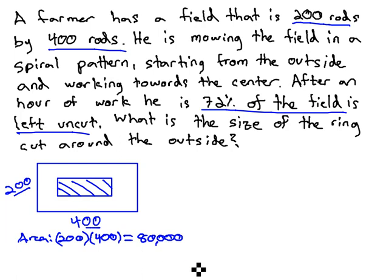But we want 72 percent on the inside. To find 72 percent of that 80,000, we'll multiply by 0.72 times the 80,000. 80,000 times 0.72, we end up with 57,600.